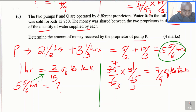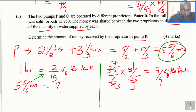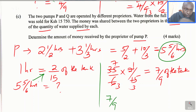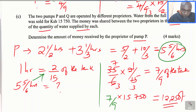That is the fraction filled by pump P for the total time — the quantity of water supplied by pump P. The remaining fraction was supplied by pump Q. To get the amount of money for the proprietor of pump P, we take 7 over 9 multiplied by 15,750, which gives 12,250. So 12,250 shillings is the amount received by the proprietor of pump P. That is how you solve this question.